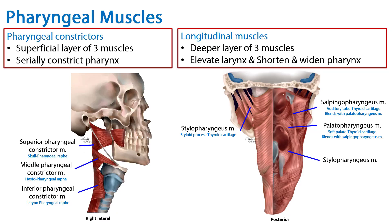We've discussed the two sets of pharyngeal muscles — the constrictors and the longitudinal muscles — their names, attachments, and actions. This is your summary slide. Thank you for your time.